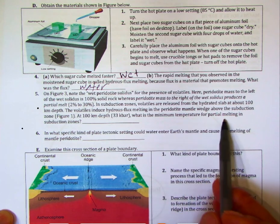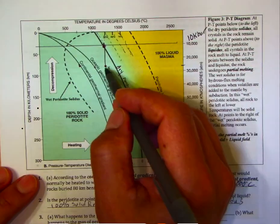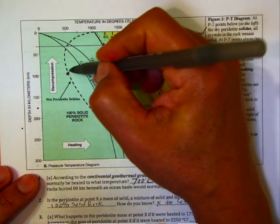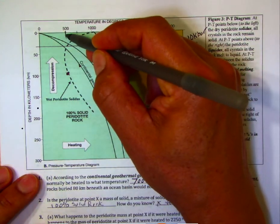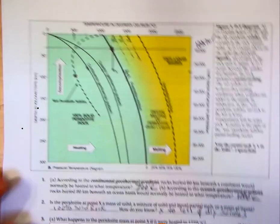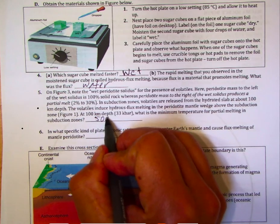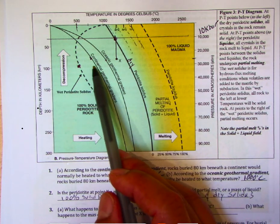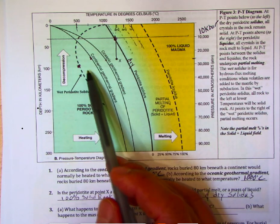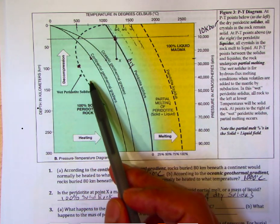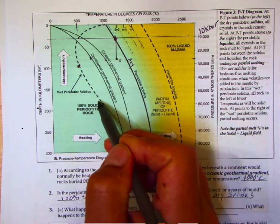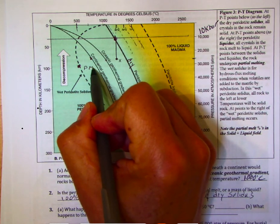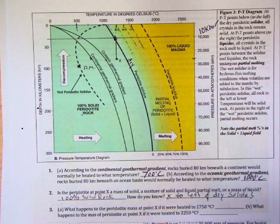What is the minimum temperature for this to occur? Looking at the curve at 100 kilometers depth, the minimum temperature is essentially 500 degrees Celsius. According to the geothermal gradients for both ocean and continental settings, the temperature is hotter than that, so there's plenty of temperature to produce magmas. Anything to the left of the wet peridotite solidus is 100% rock; to the right, partial melts occur.